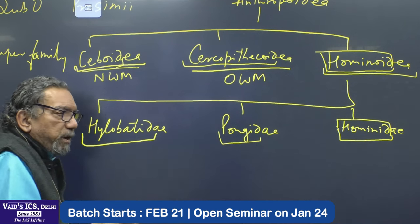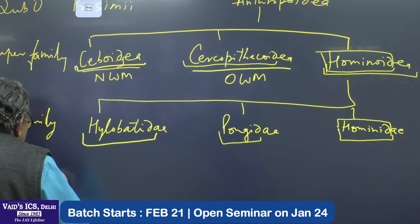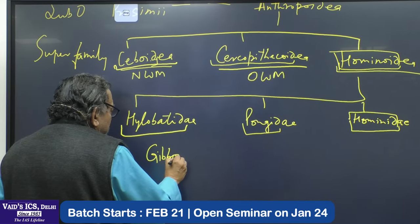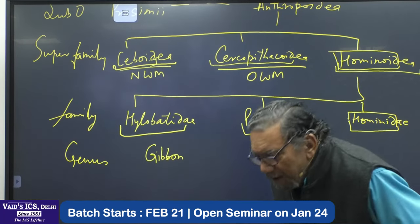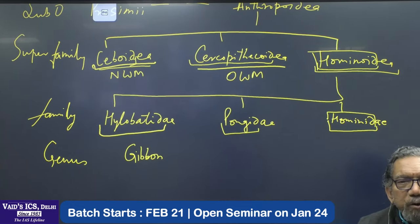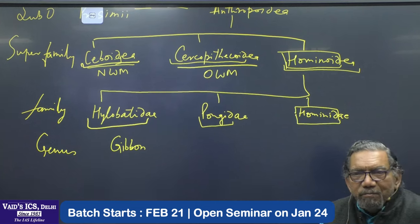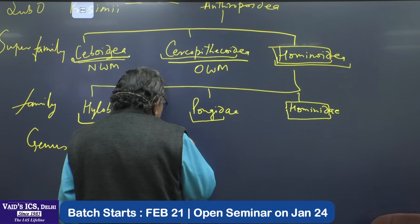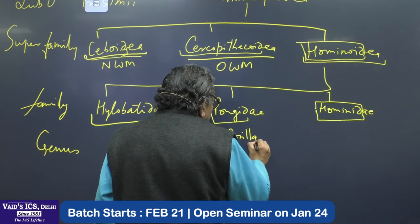When we talk about living primates, we straight away talk about the individuals — you call them genus. You have Gibbon in Hylobatidae. In Pongidae, there was once an exam question asking which of the following is an ape — Gibbon was the correct choice, but most people would pick Langur or Hanuman Monkey. In Pongidae you have three: Chimp, Gorilla, and Orang.